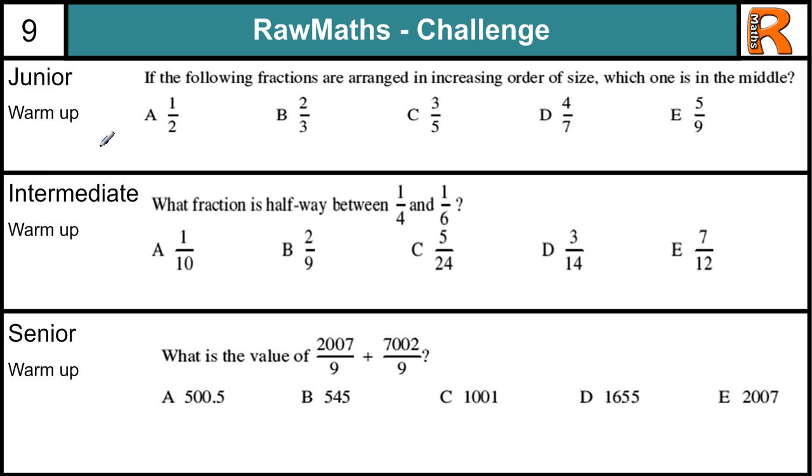Let's get started with the junior warm-up. If the following fractions are arranged in increasing order of size, which one is in the middle? Now we could make these all out of 630. If we did 2 times 5 times 7 times 9, that would give us 630. And we could then multiply them up to find out what the equivalent fractions are. A slightly cleverer way of doing it would be to think about that these are all fairly close to a half.